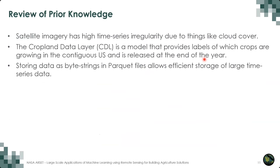As prior knowledge review: we are working primarily with satellite imagery, which has a high amount of irregularity due to things like cloud cover. The cropland data layer, which is our source of ground truth, provides labels used as targets during training. It covers the continental United States and is released once a year at the end of the year — we have roughly 20 years of this data. In the previous part, we showed how data was stored as byte strings in parquet files — not human-readable, but allows for efficient storage of very large data and faster load times from disk.